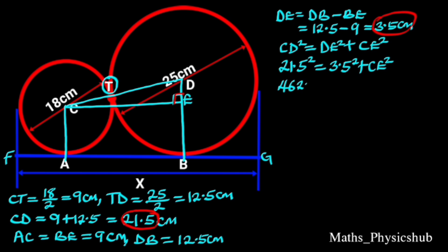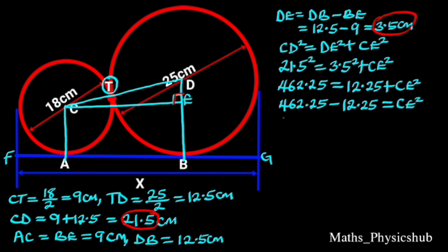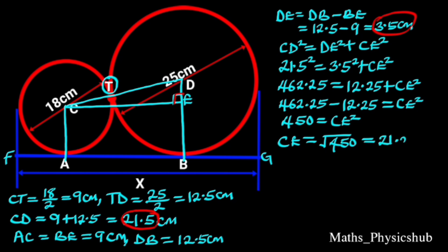21.5² is 462.25, and 3.5² is 12.25. It follows that 462.25 equals 12.25 plus CE². To find CE, we take 12.25 to the left side — 12.25 going to the left will become negative — so that 462.25 minus 12.25 equals CE². 462.25 minus 12.25 is 450, so 450 equals CE². Taking the square root of both sides gives CE equals the square root of 450, which is approximately 21.21 cm.